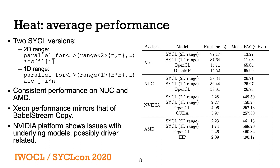Now, moving on to the Heat code. This table shows the runtime and aggregate memory bandwidth as reported by the code. Obviously these numbers are related, as the amount of memory moved is the same in all cases, so the bandwidth can be calculated from the runtime. As before, we only compare performance within a single architecture. We have two SYCL versions here. The first uses a two-dimensional range, which launches a 2D kernel and indexes the memory accessors using a 2D SYCL ID. The second manually flattens this to a one-dimensional range, launching a 1D kernel and linearizing the index by hand.